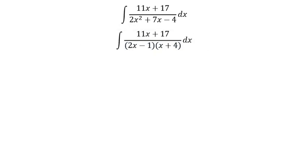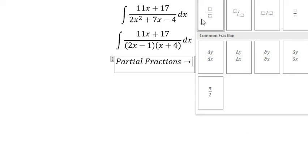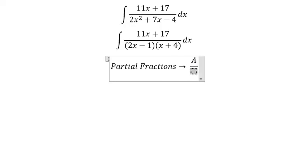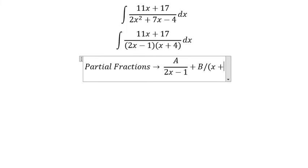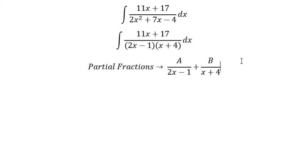Next we need to use partial fractions, so we put capital A over 2x minus 1, capital B over x plus 4. Next we need to do common denominator.